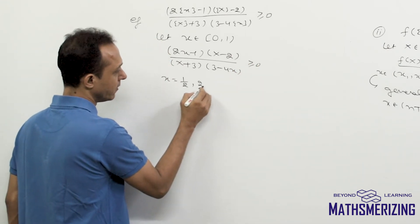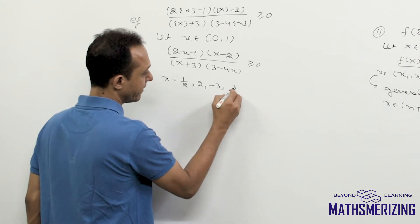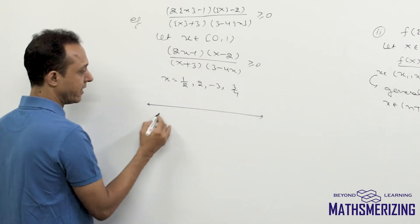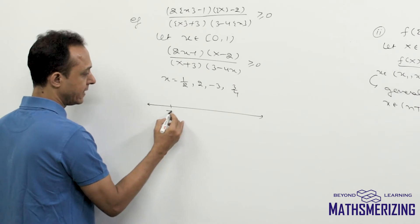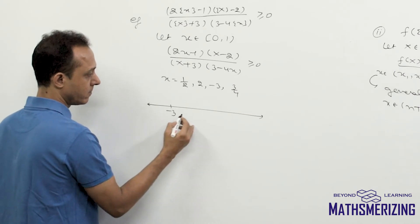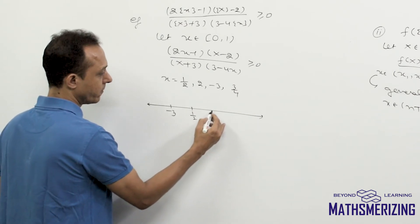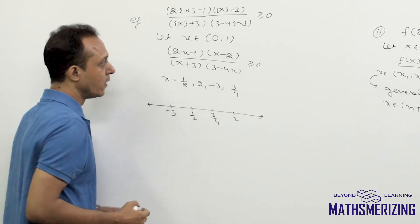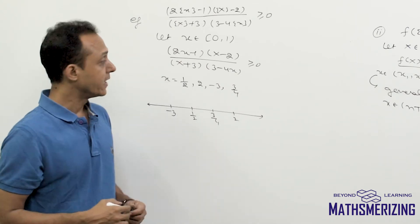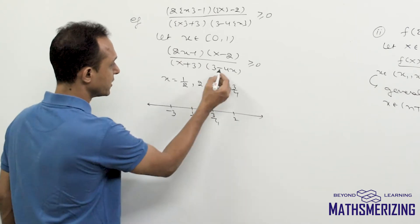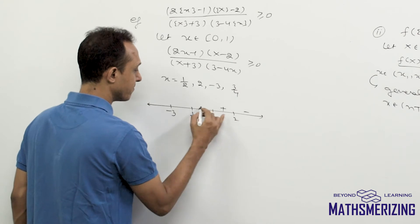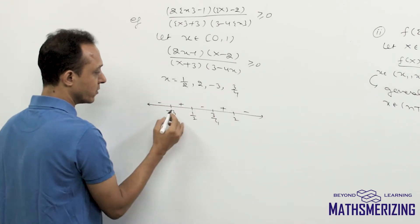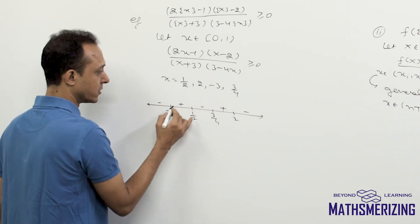Finding the critical points gives 1/2, 2, -3, and 3/4. So the values on the number line are: -3, then 1/2, then 3/4, then 2. The sign of the rightmost interval is negative, so the signs alternate: minus, plus, minus, plus, minus. I need the expression to be greater than 0, meaning positive.